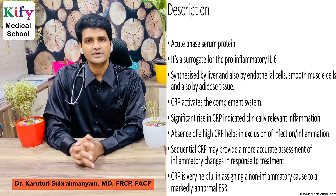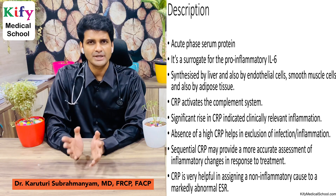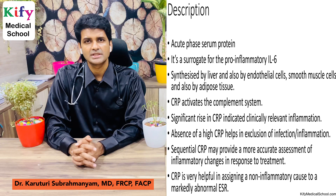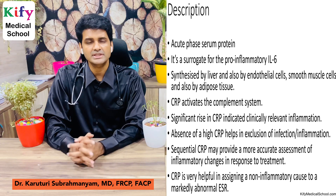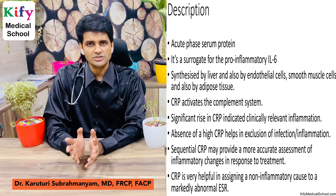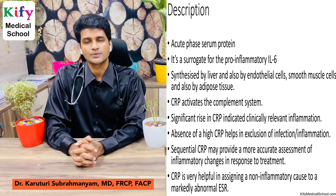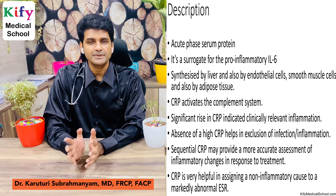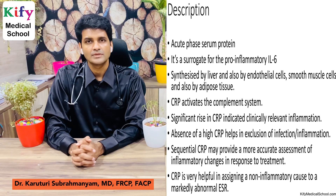CRP is synthesized by the liver, and also by endothelial cells, smooth muscle cells, and adipose tissue. CRP activates the complement system.